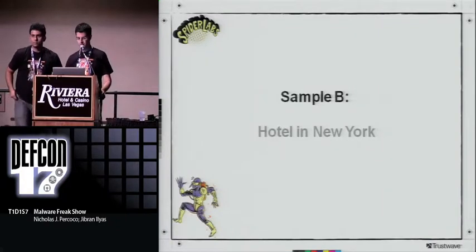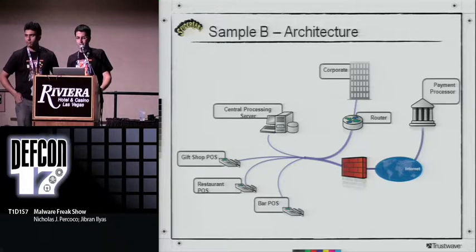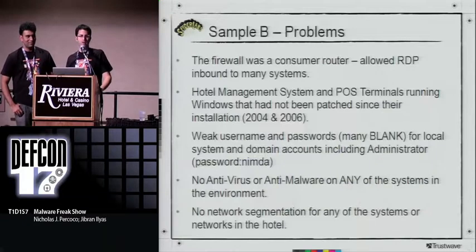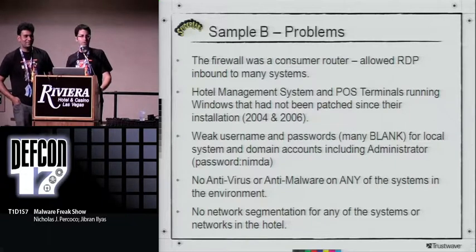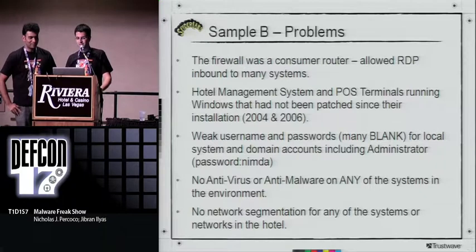The second piece of malware we obtained from a hotel in New York. The architecture looks rather similar to the casino club, but one major difference is this was a chain of hotels — more than one environment connected, with a router leading up to corporate. We also have multiple machines: a gift shop, a restaurant, a bar, and a central processing server. When we do these investigations, we often stay at the same hotel, and team members have noticed that when you're plugged into the hotel room, you're able to reach all the servers around the environment. The IT administrators made a major mistake by plugging switches in the wrong place. Hotel wireless internet was also plugged into the same network as the reservation systems.